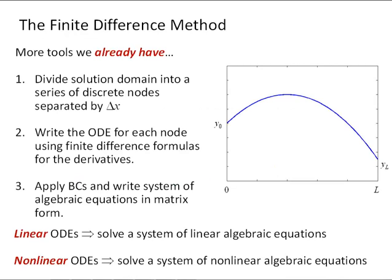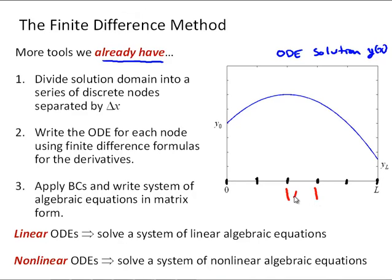The finite difference method is a new combination of tools and strategies we've already used for other problems in this class. The basic idea is as follows: given our ODE solution Y of X, we will divide the solution domain into a series of discrete nodes separated by delta X. For each value of the ODE function at each node, we will write the differential equation using the finite difference formulas developed earlier for derivative approximation.